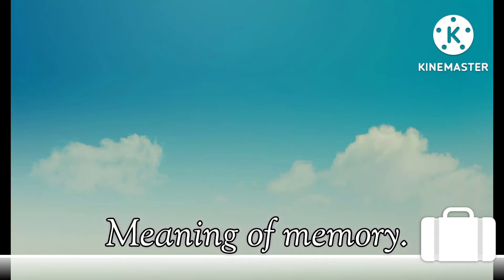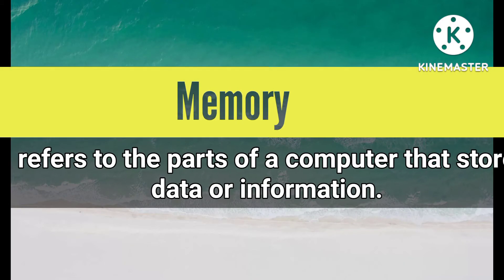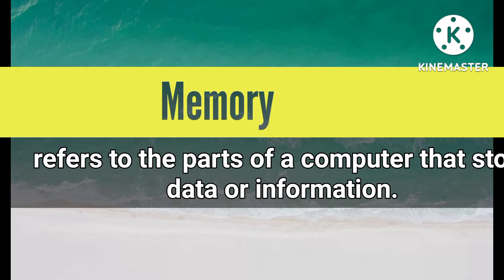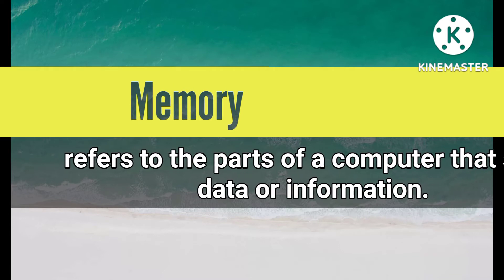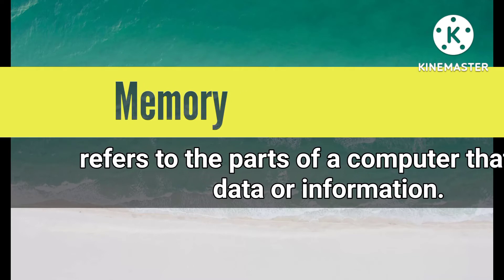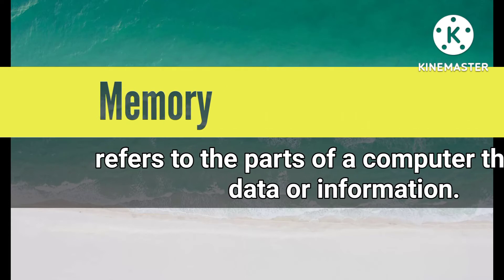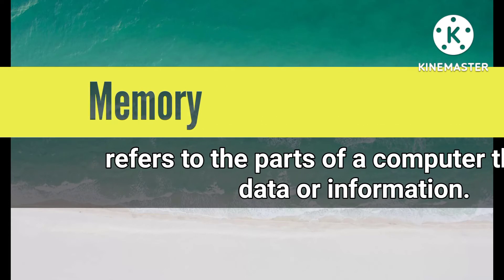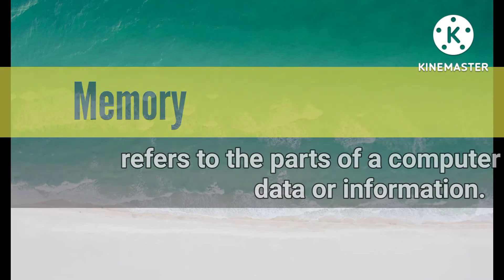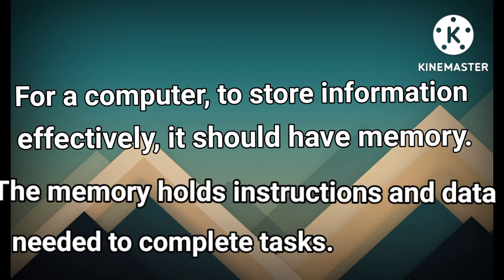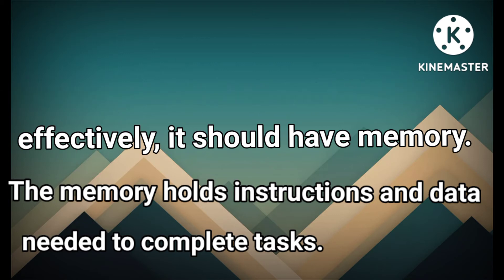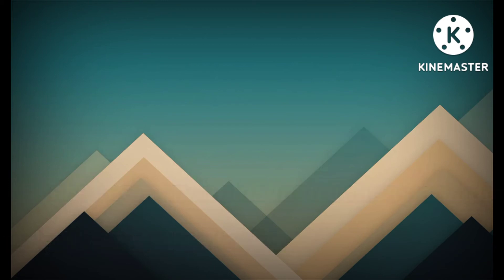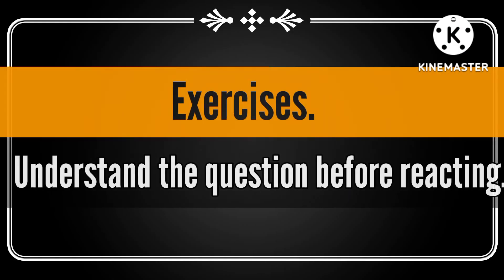Memory refers to the parts of a computer that are used to store data or information, just like our brain has memory which stores information and experiences. The computer also has memory which stores all the things we do with it. For the computer to store information effectively, it must have memory — the memory holds instructions and data needed to complete tasks.